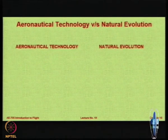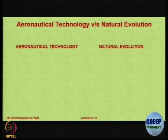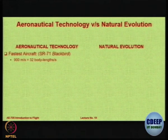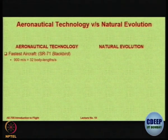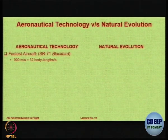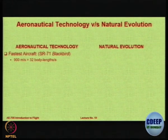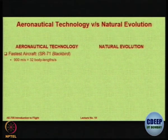We will do a very quick comparison between the aeronautical technology available to us and the natural evolution. The fastest aircraft, as all of you definitely know, is the SR-71 Blackbird which flies at 900 meters per second. But when you put it in perspective with its own dimensions, it travels 32 times its body length per second.